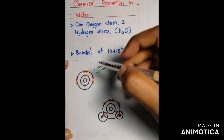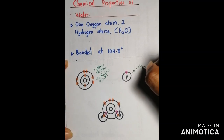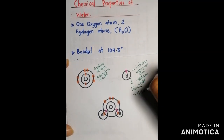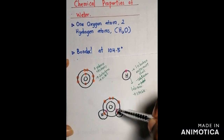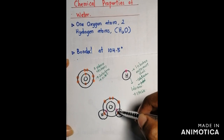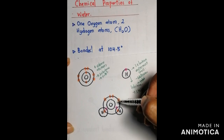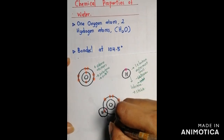Valence electrons are the electrons in the outermost shell. Oxygen needs two more electrons to achieve octet, while hydrogen has only one electron in its outermost shell and needs one more electron to be stable. So what happens is the oxygen atom pulls both hydrogen atoms toward it to achieve octet. Each hydrogen atom shares its electron with the oxygen atom, so now oxygen has achieved octet — eight valence electrons — and hydrogen has two valence electrons. This sharing of electrons is called a covalent bond.